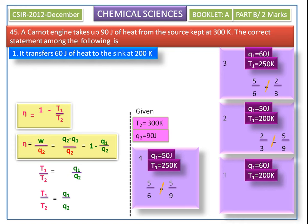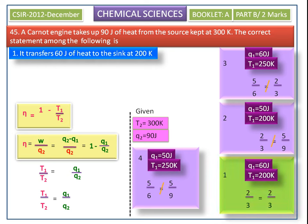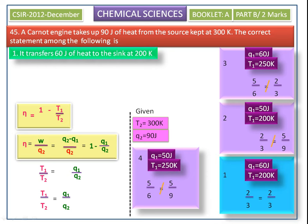Finally, considering the first option, we get T1 by T2 equal to 2/3 and Q1 by Q2 also equal to 2/3. Since T1/T2 equals Q1/Q2, the first option is the correct answer: the engine transfers 60 J of heat to the sink at 200 Kelvin.